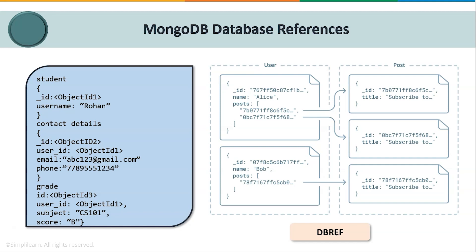But what if the data you're trying to search isn't present in the same collection or database? That's where you have to use DBRefs. DBRefs are references from one document to another using the value of the first document's ID field, collection name, and optionally its database. DBRefs allow you to more easily reference documents stored in multiple collections or databases. For example, if you have a user collection and a post collection and you're trying to fetch data from the post collection — which may be in another database — you have to reference that database using DBRefs.